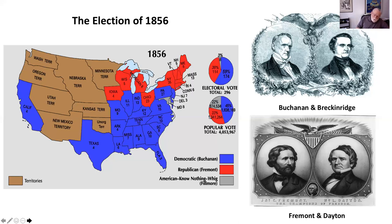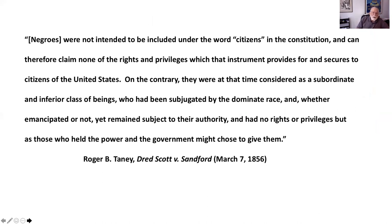Two days after the inauguration, on March 6, 1857, the court ruled against Scott. First holding: the Constitution's framers never intended that Negroes were citizens of the United States, regardless of whether some northern states allowed them to be citizens of their particular state — thus Scott lacked standing to sue in federal court. Taney wrote: 'Negroes were not intended to be included under the word citizens in the Constitution and can therefore claim none of the rights and privileges which that instrument provides for and secures to citizens of the United States. On the contrary, they were considered a subordinate and inferior class of beings who had been subjugated by the dominant race, and whether emancipated or not, yet remained subject to their authority.' Taney, a former slave owner, felt that African Americans had no inherent rights whatsoever.